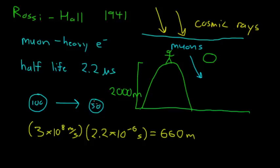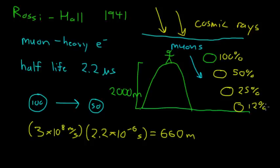So according to this classical picture, if I start out with 100% of the sample that I saw at the top of the mountain, then when I go down 660 meters, I should only see 50% of the sample. And as I go down another 600 meters, I'll only see 25% of the sample. And as I get down to here, I should only see about 12% of the sample.